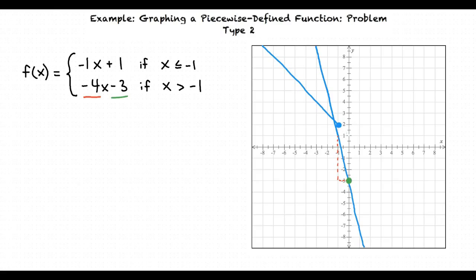Now we must erase everything to the left of the point negative 1, 1, because we are only asked to graph negative 4x minus 3 when x is greater than negative 1. Our final step is to place an open circle at the point negative 1, 1, because x is greater than negative 1.